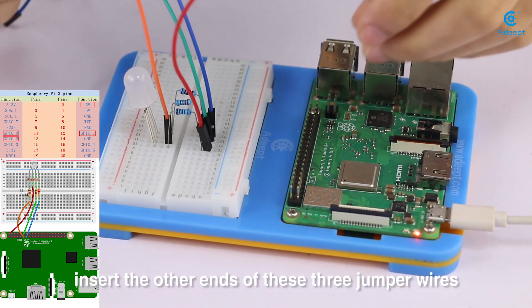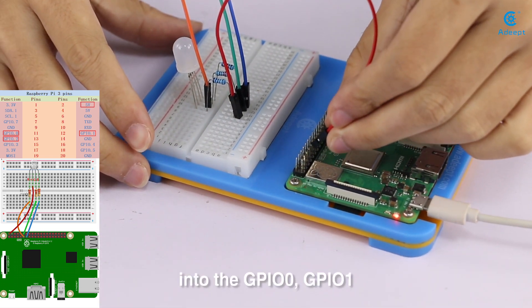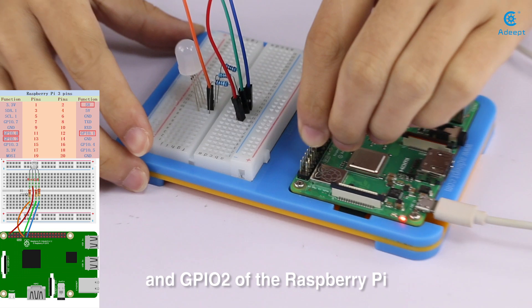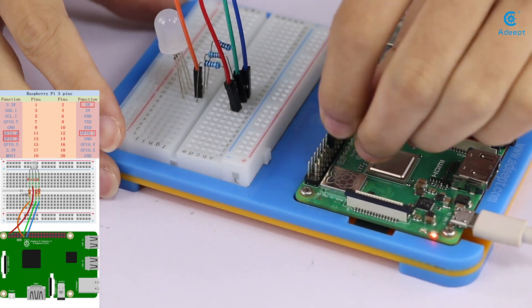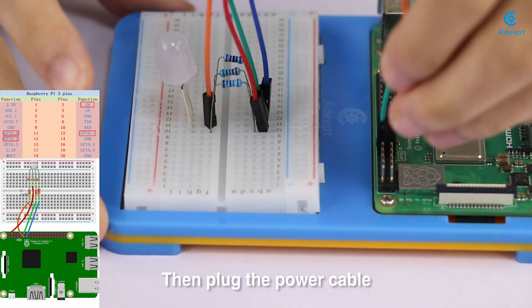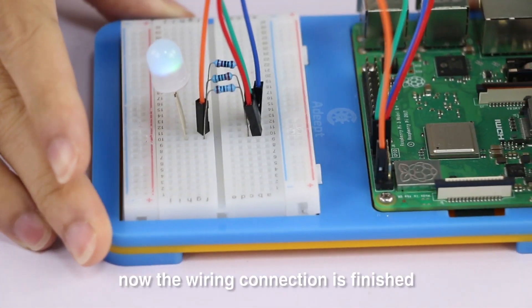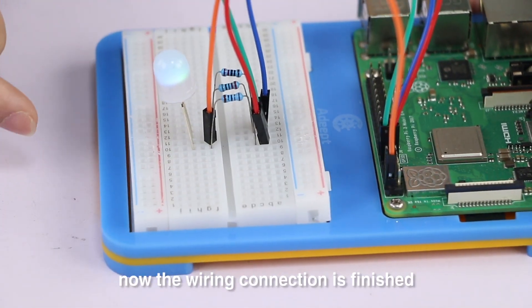Insert the other ends of these 3 jumper wires into the GPIO0, GPIO1, and GPIO2 of the Raspberry Pi. Then plug the power cable into the Raspberry Pi. Now the wiring connection is finished.